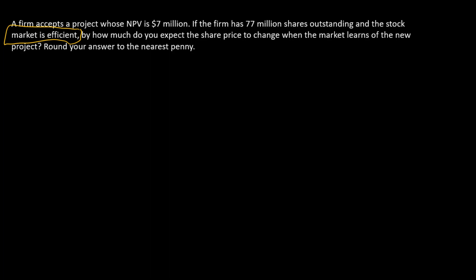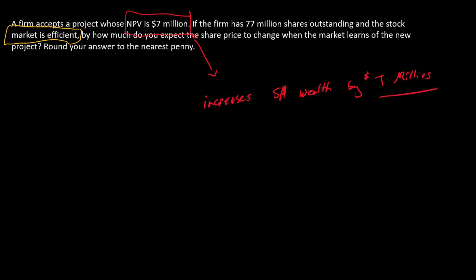So what does that mean in this case? Prior to the acceptance of the project, the firm had a given market value. The project itself, because it has an NPV of $7 million, increases shareholder wealth by $7 million. As far as the stock market is concerned, this is new information. As soon as this information comes out to the market, the market recognizes that this firm's shareholder wealth is actually $7 million greater than it was before, so we should see an immediate increase in shareholder wealth of $7 million.